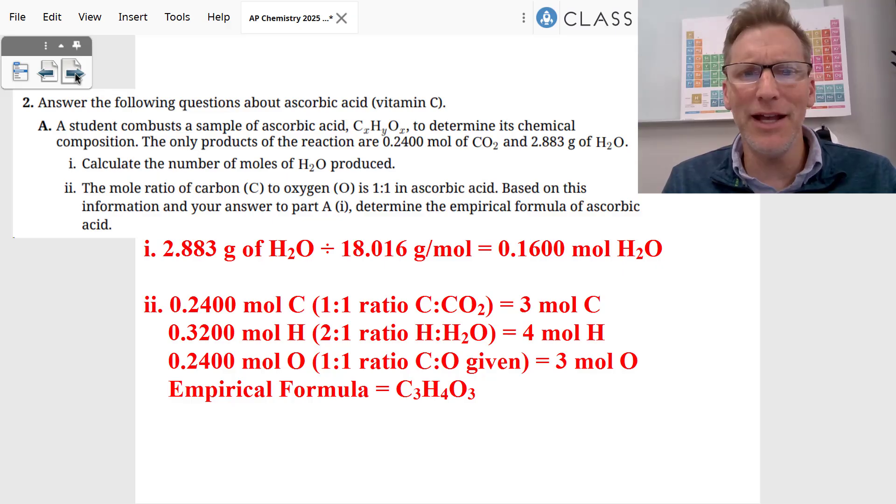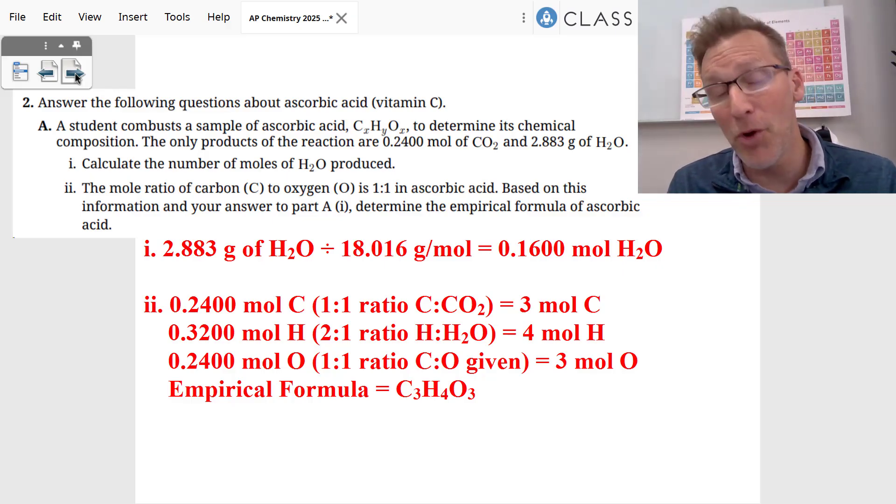Then we want to find an empirical formula for ascorbic acid. They already told us the moles of carbon is the same as the moles of oxygen. If we know 0.2400 moles of carbon dioxide, since there's a one-to-one ratio of carbon into carbon dioxide, we know there's 0.24 moles of carbon. If there's 0.24 moles of carbon, they told us the same number of moles of oxygen, which is 0.24 moles of oxygen.